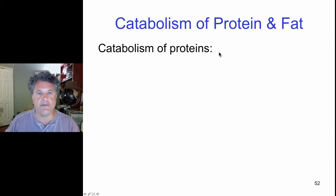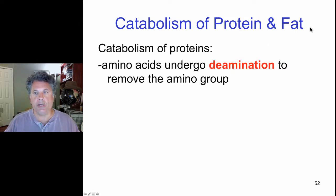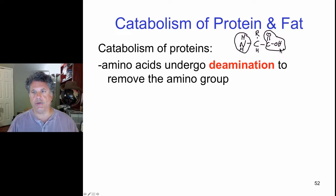So let's look at this at a very superficial level and first look at the catabolism of proteins. As you know, proteins are made out of amino acids, and an amino acid has the basic structure NH2, alpha carbon, R group, hydrogen, and then an acid group. Proteins can be hydrolyzed into their constituent amino acids as the first step of catabolism.